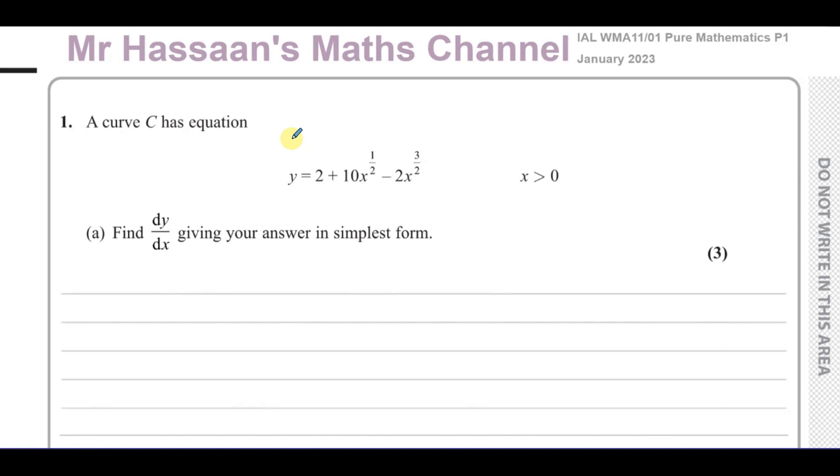Here we have a curve C has equation y equals 2 plus 10x to the power of a half minus 2x to the power of 3 over 2, where x is greater than 0. Find dy/dx giving your answer in simplest form. This is a pretty simple question to start off with. We're given this equation y equals 2 plus 10x to the power of a half minus 2x to the power of 3 over 2.